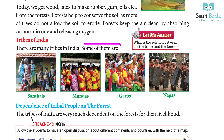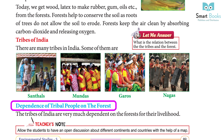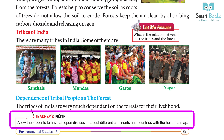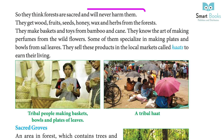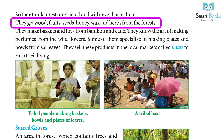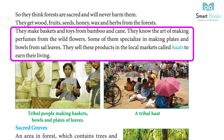There are many tribes in India; some of them are Santhals, Mundas, Garos, and Nagas. The tribes of India are very much dependent on the forest for their livelihood. They consider forests sacred and will never harm them. They get wood, fruits, seeds, honey, wax, and herbs from the forest. They make baskets and toys from bamboo and cane, and know the art of making perfumes from wild flowers. Some specialize in making plates and bowls from sal leaves, which they sell in local markets called haats to earn their living.